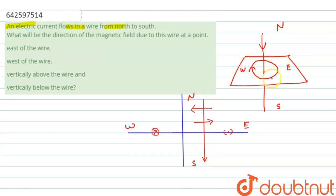That means it is vertically above. The direction of magnetic field will be east to west, and vertically below it will be from west to east. And at this point it will be upward, and at west it will be downward.